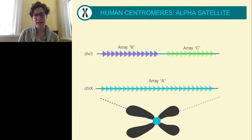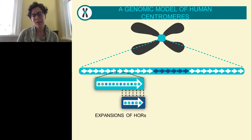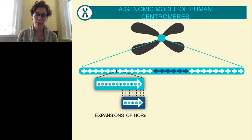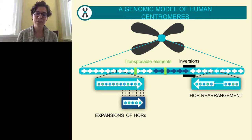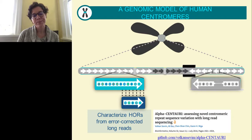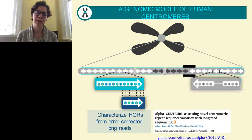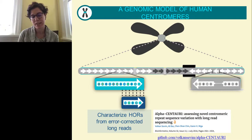It's not enough to understand one centromere and apply it to others. For example, chromosome 3 might have two very different arrays labeled B and C, while another chromosome has a different repeat structure labeled array A. Even within a single centromeric region, the tandem repeat has its own set of variants — including expansions, truncated copies, transposable elements, sporadic rearrangements, and inversions within the array itself.